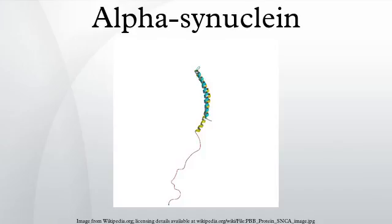Presynaptic terminals release chemical messengers called neurotransmitters from compartments known as synaptic vesicles. The release of neurotransmitters relays signals between neurons and is critical for normal brain function.